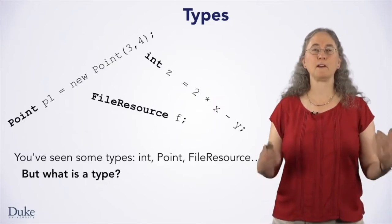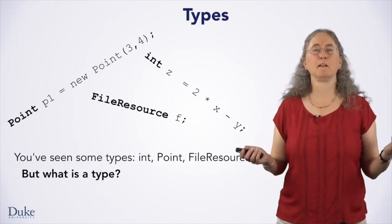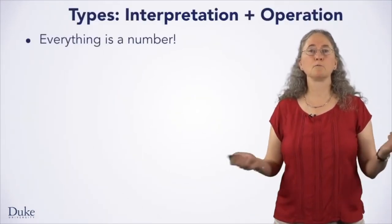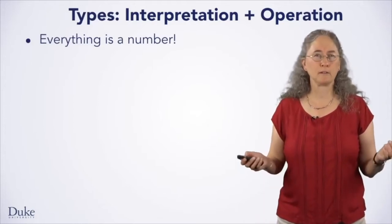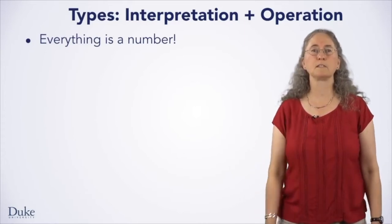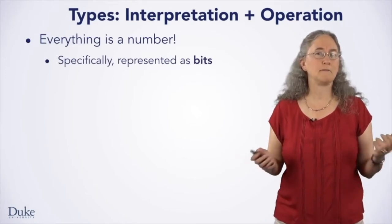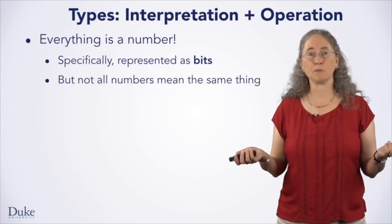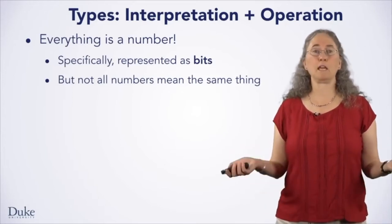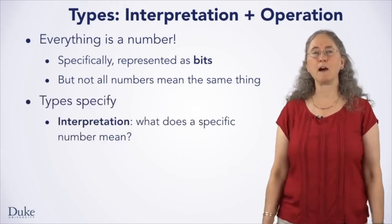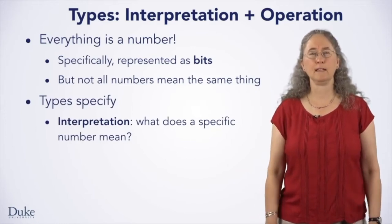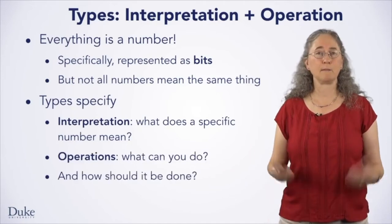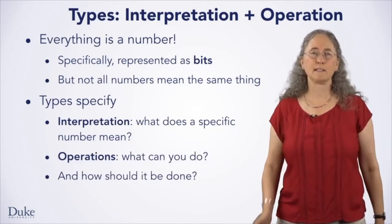At this point, you have seen a variety of types such as int, Point, and FileResource. But what exactly is a type? A type specifies how data should be represented, interpreted, and operated on, as well as what operations you can do with it. One important rule of computing is that everything is a number — everything is stored in the computer's memory as bits, ones, and zeros. But not all numbers mean the same thing: some numbers might mean plain numbers, while others might mean letters, and others might mean the locations of data in the computer's memory. So the type of a value specifies how to interpret those numbers — it tells Java how to assign meaning to the ones and zeros stored in memory. The type also specifies what operations you can perform on the data and how they should be done.